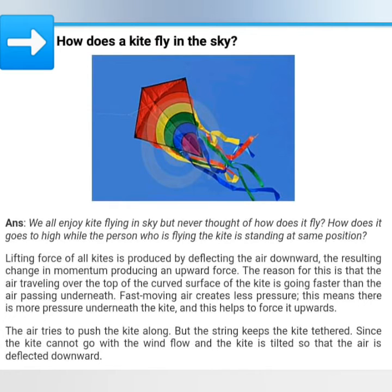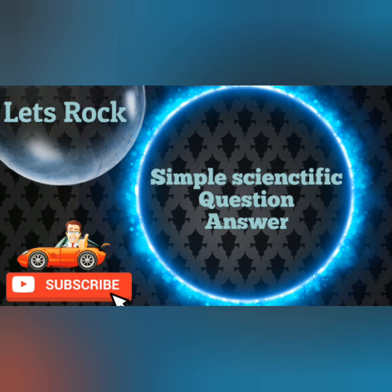The air tries to push the kite along, but the string keeps the kite tethered. Since the kite cannot go with the wind flow, and the kite is tilted so that the air is deflected downward. Subscribe to my channel for more information and support.